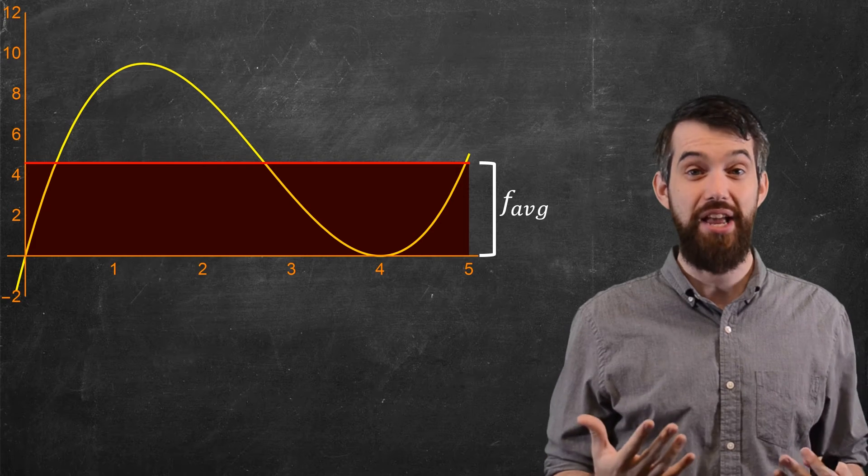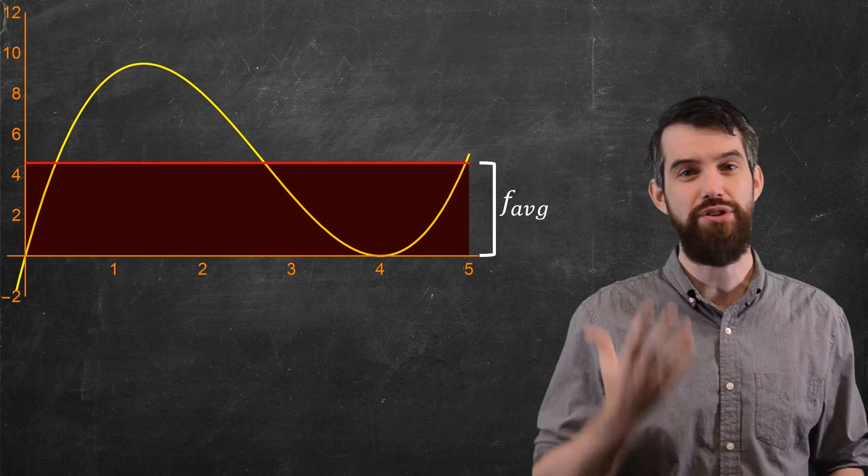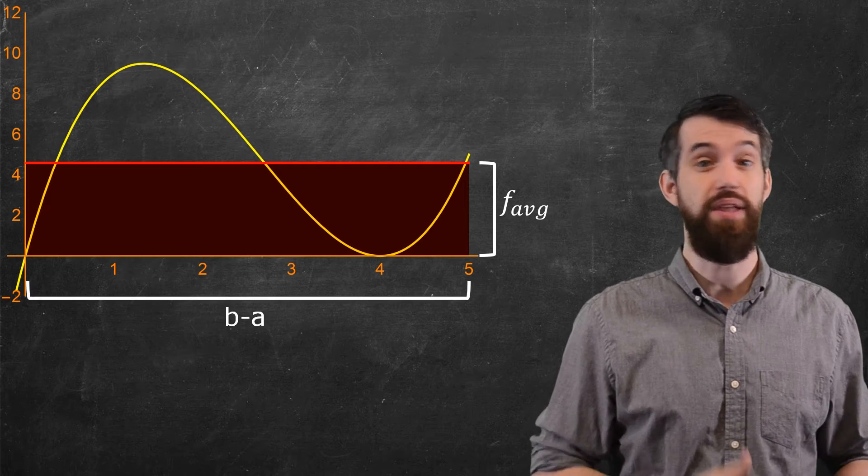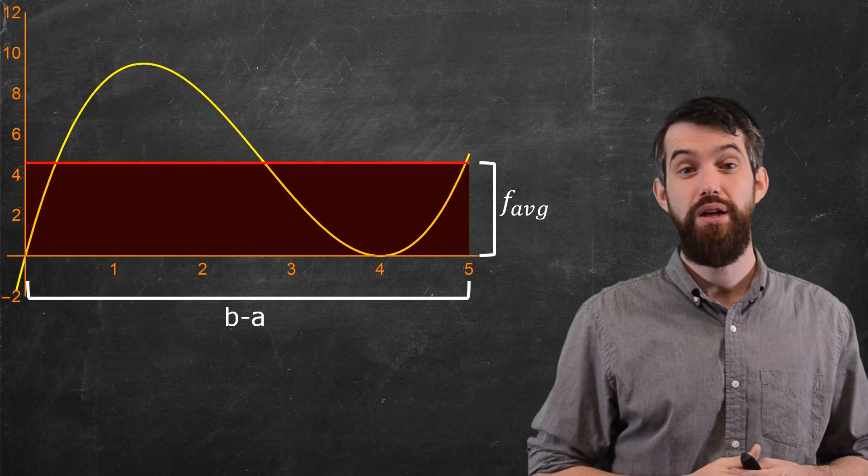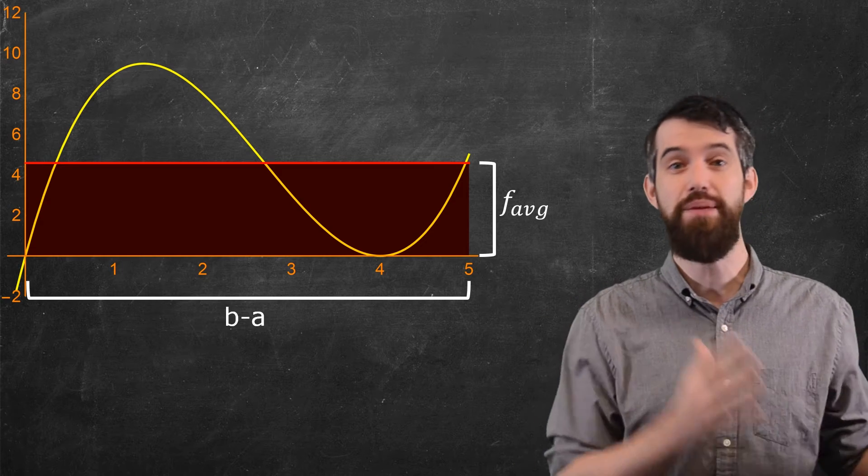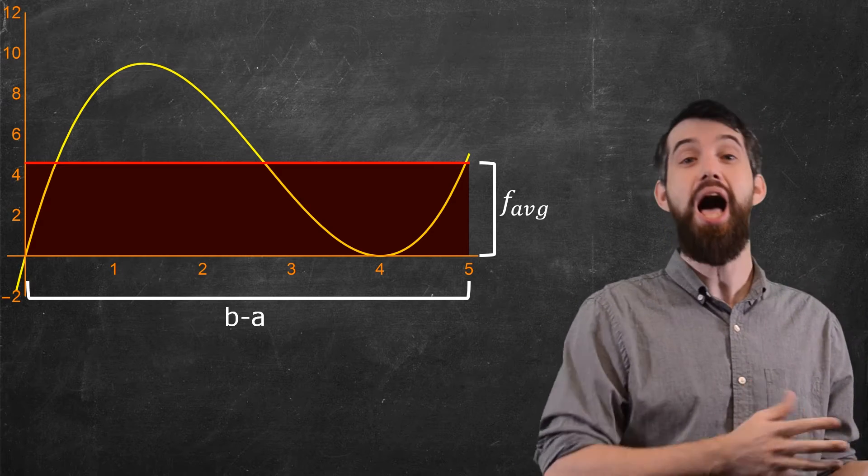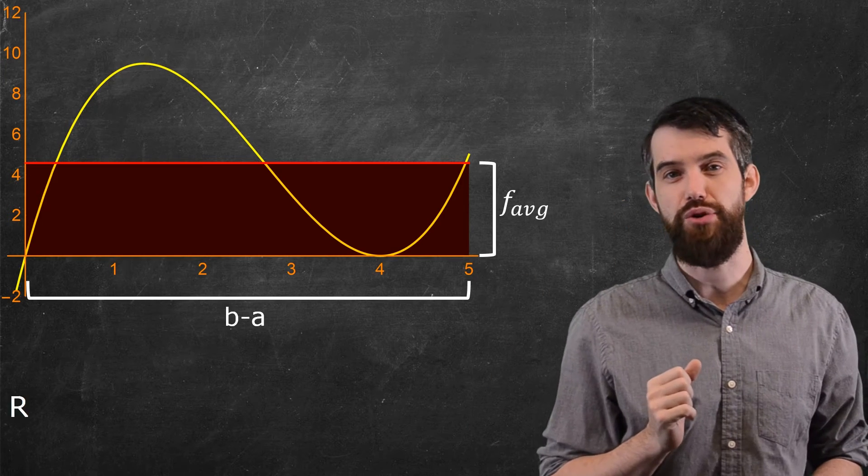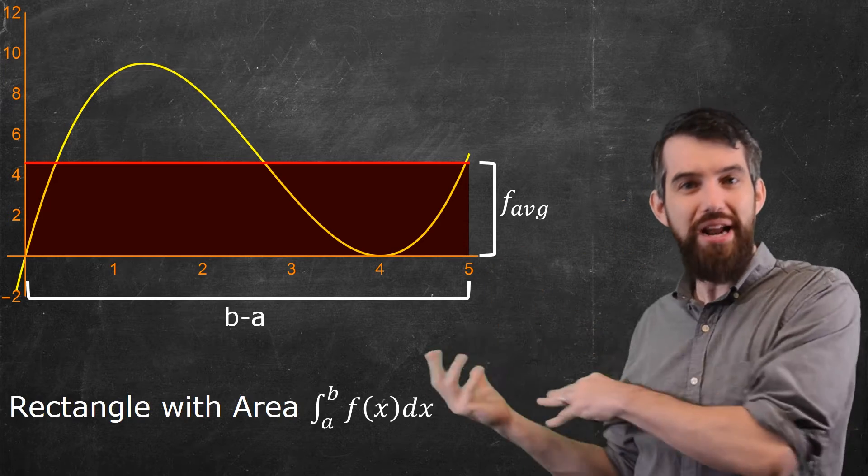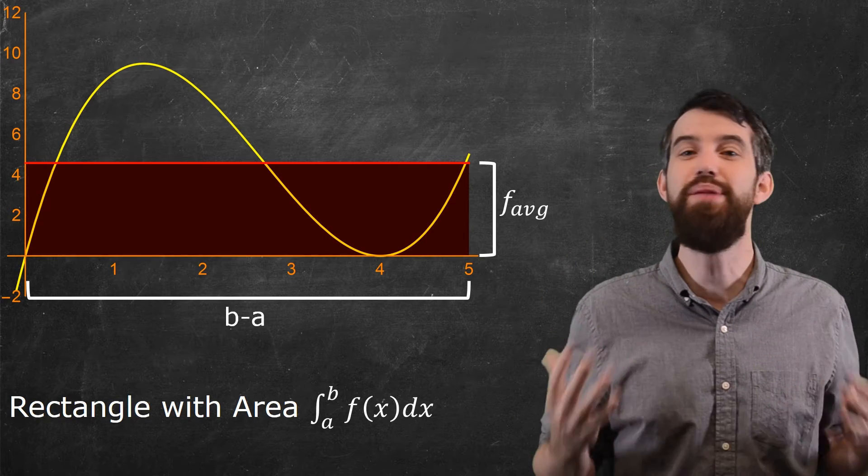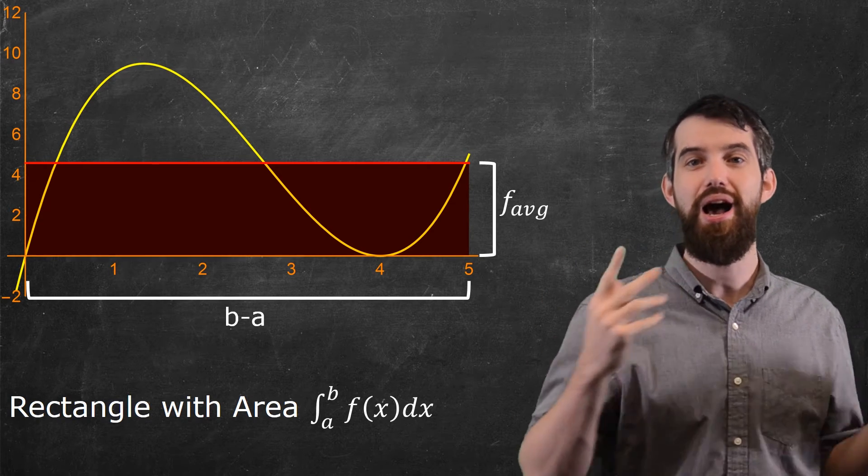Now, what this gives me is a rectangle, the height of it is f average by construction, and the width of it is the b minus a. In this case, just 5. So if I look at the area of this rectangle that I have, so base times height, the b minus a times the f average, which is 1 over b minus a times the integral, so the area of this rectangle is the same thing as the area under the curve. It's the same thing as the integral from a up to b of f of x dx.